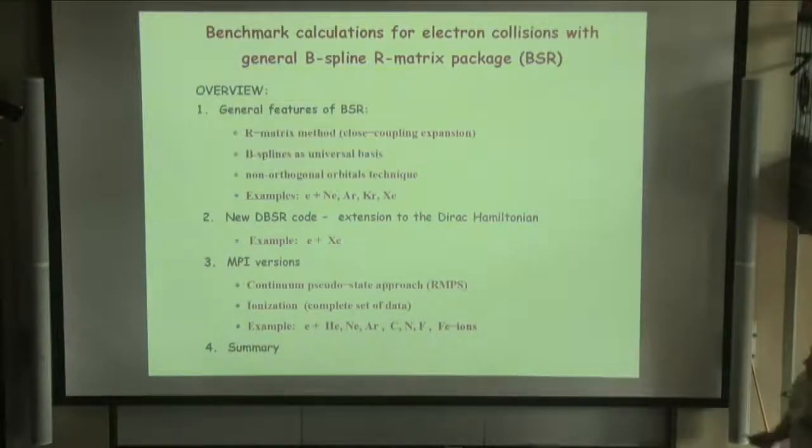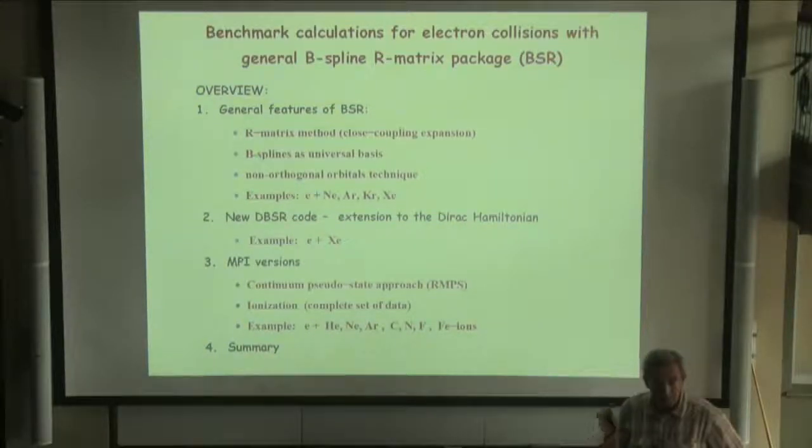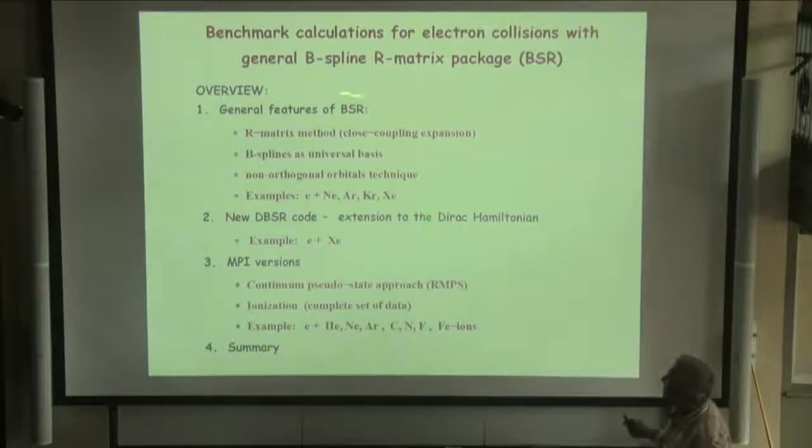All our calculations were obtained with this B-spline R-matrix package, which we've already developed more than 10 years. This package has some new features that should be described. Each feature allows us to obtain much more accurate results for many cases. I provide an example here for scattering on noble gases. I will also stay on the extension to the Dirac Hamiltonian, which is supposed to increase the accuracy for heavy atoms.